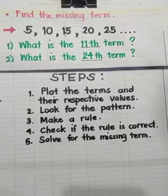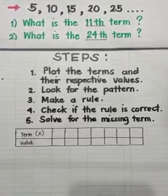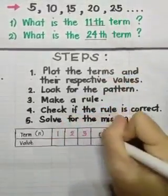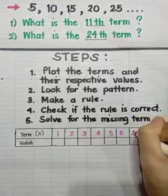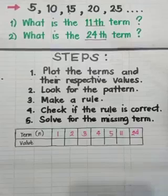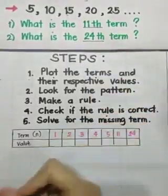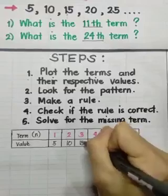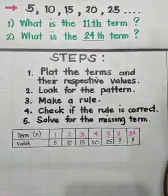Let's do it step by step. First, we're going to plot the terms and their values using a table. I have here the table. The upper column would be the term: first, second, third, fourth, fifth, and then we have the 11th and the 24th term. The upper row would be for the term, and then the lower row will be for the equivalent value. So our first term is 5, the second term is 10, the third is 15, the fourth is 20, and the fifth is 25. So the 11th term is unknown as well as the 24th term.